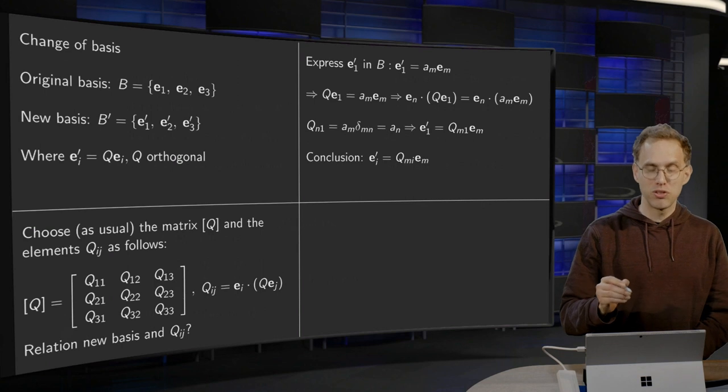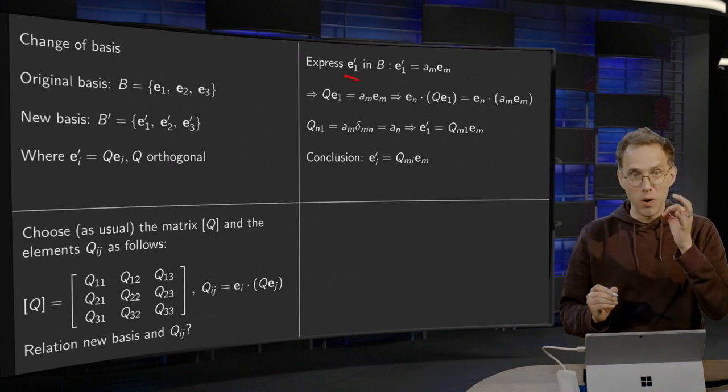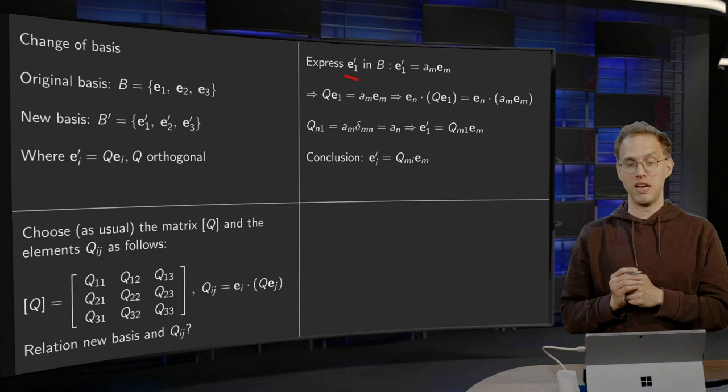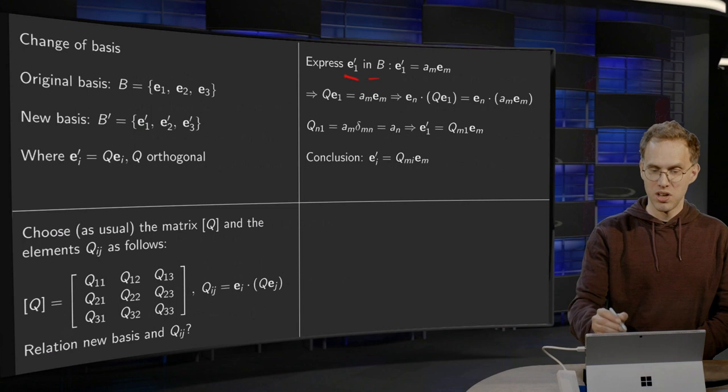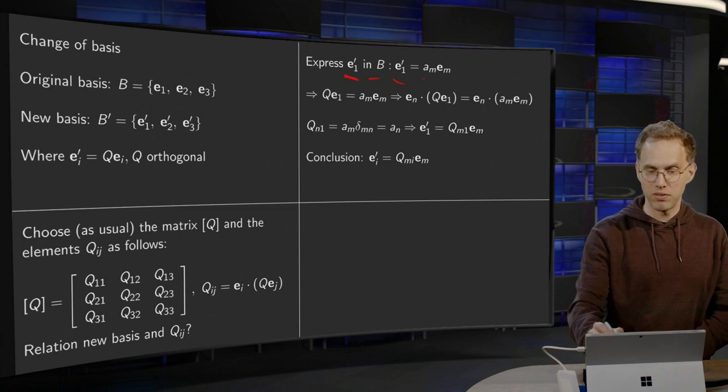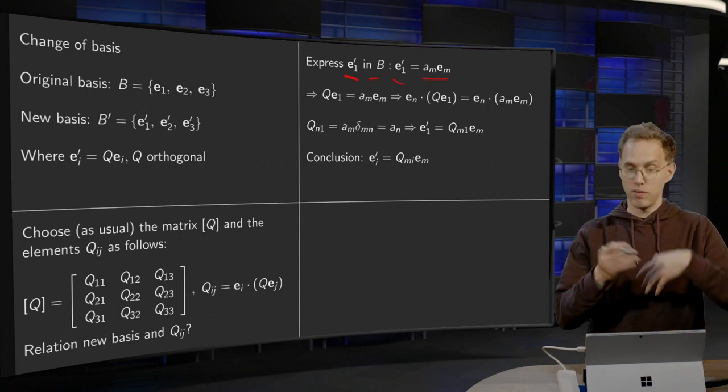First we do the following trick. We express E1', so the first new basis vector, in terms of B, in terms of all basis vectors. So we write E1' = AM*EM. We can always do that, of course.